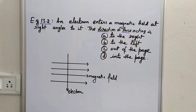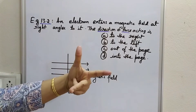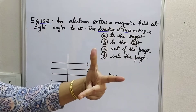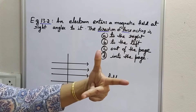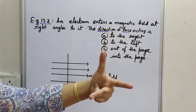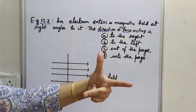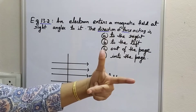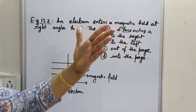Because we have to find the direction of force, this is an application of Fleming's Left Hand Rule. Remember: force, field, current. We should practice this left hand rule every time — the thumb represents force, the forefinger represents the field, and the middle finger represents the direction of current.